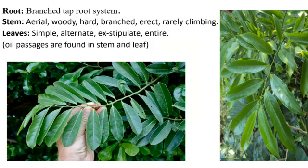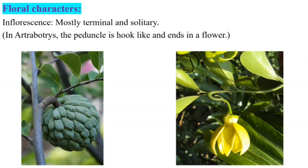Root: it has a branched taproot system. The stem is aerial, woody, hard, branched, erect and rarely climbing. The leaves are simple, alternate, exstipulate — i.e. stipules are absent. The leaf is entire. Oil passages are found in stem and leaves. You can see this in the picture clearly.